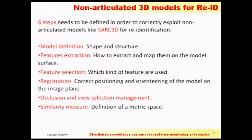First, we have to define the shape and structure of the model. Second, we define how we extract information from 2D images and project them onto the 3D model. Third, we decide which kind of features to use. Fourth, we define a method to correctly position and orient the model on the image plane. Fifth, we define the similarity measure to check for similar people.